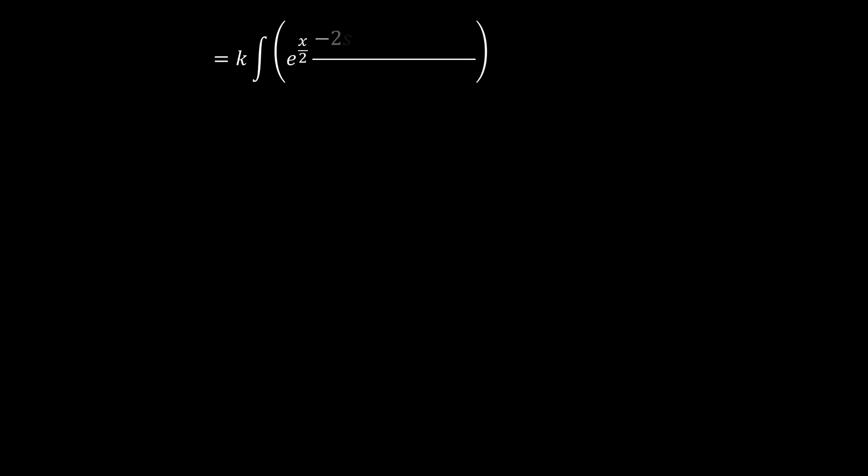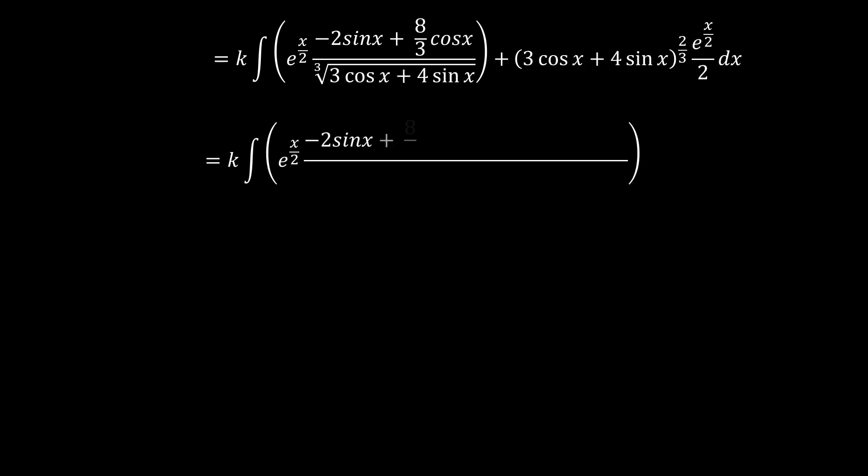So then, as you know, we keep maintaining our constant there, as shown here. So with k there, and then combining everything together, you see the sine terms cancel out, and then we're left with 8 over 3 cosine x plus 3 over 2 cosine x.